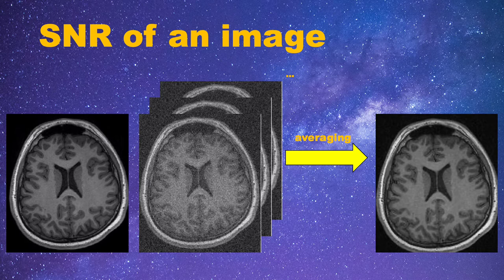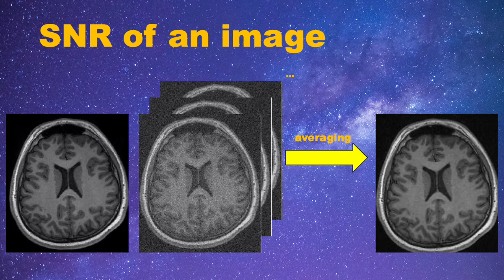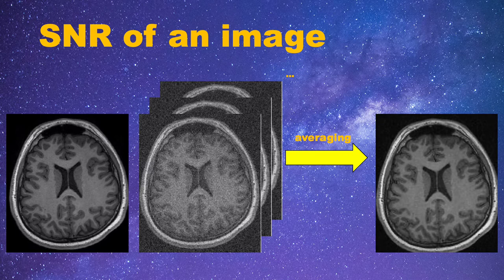However, if you have only one coil, you will have to repeat the acquisition process to get those extra images and thus you will need more time. This is not very efficient. In practice, we always want the scan time to be as short as possible.